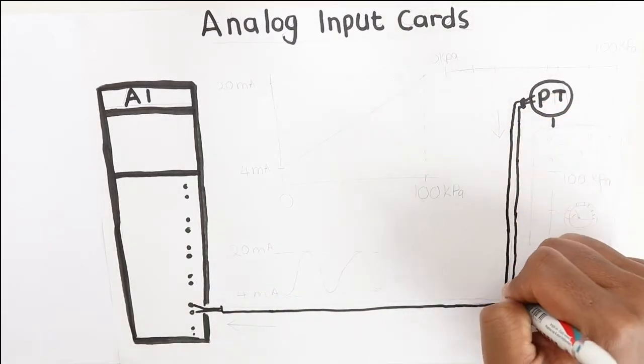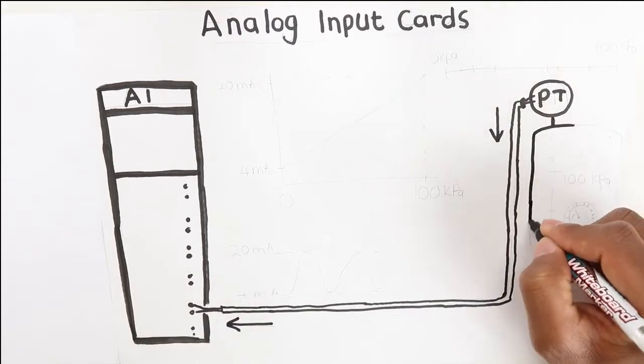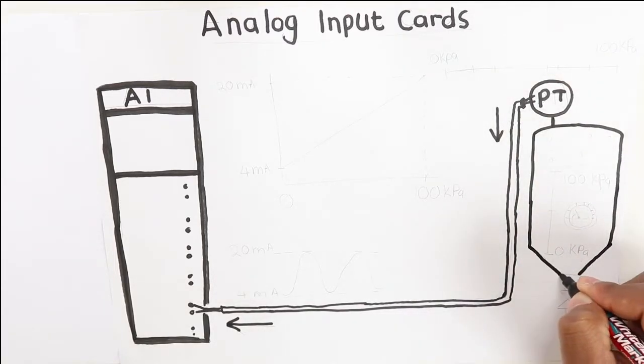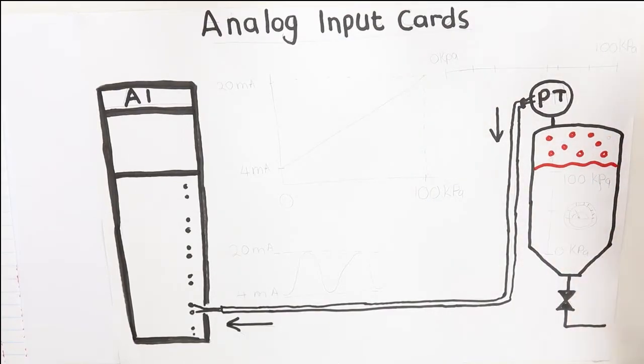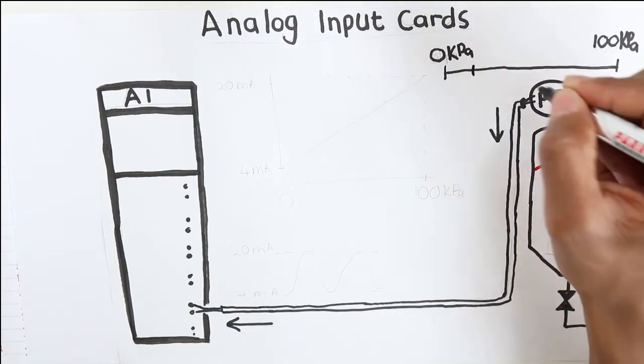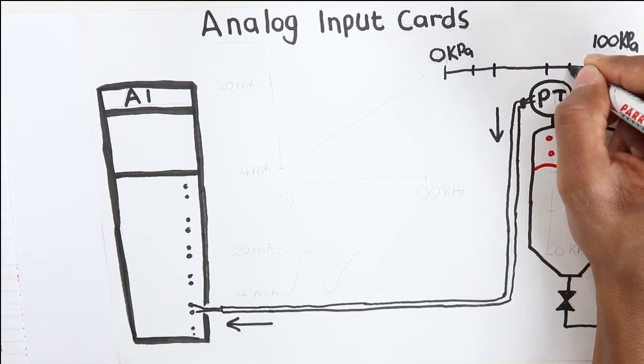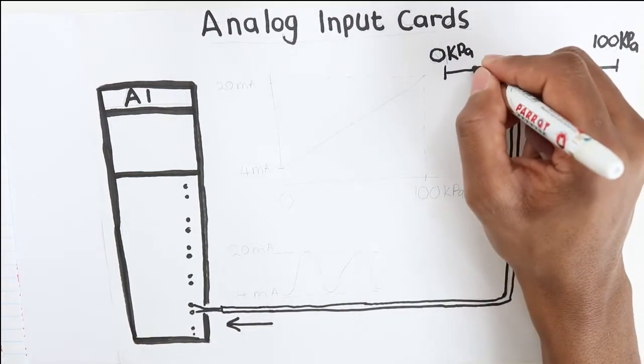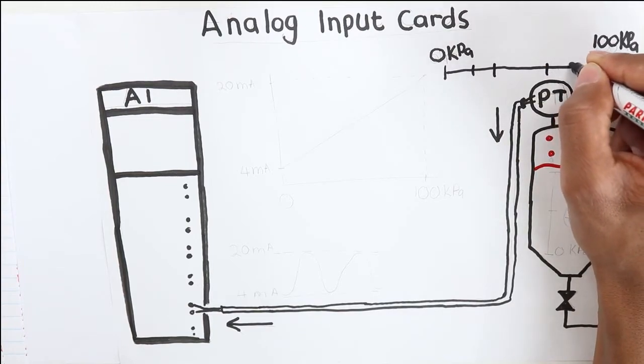For example, a pressure transmitter is an analog input instrument because it tells you how much pressure is in the tank. For instance, it will tell the PLC if the pressure is at 20 kPa, 30 kPa, 51 kPa, 71 kPa - it doesn't care, it just gives the pressure as it is from the process.